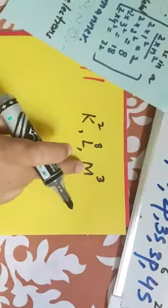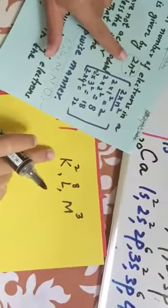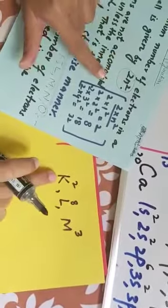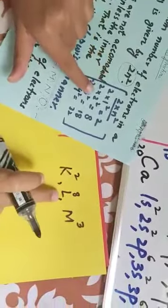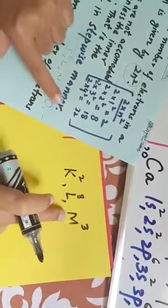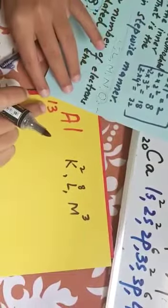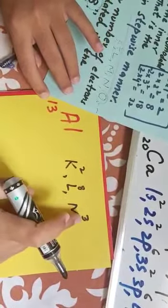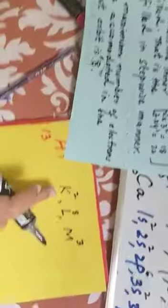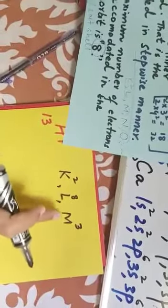So according to the rules, rule is 2N squared. According to 2N squared, first shell holding 2, second shell holding 8, and third shell can hardly accommodate 18. But right now the aluminum has 13 electrons, so it requires hardly 3 electrons in outermost shell. Second rule says fill electrons in stepwise manner. Stepwise means first shell filled, second shell, then third shell.